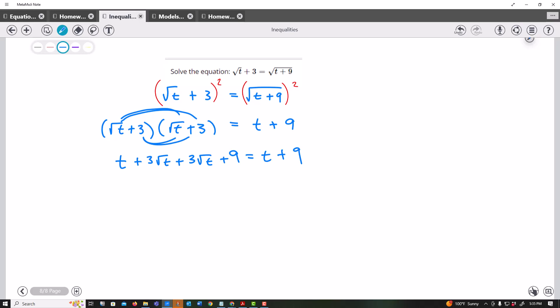Alright, so from here I probably want to get t all on one side by itself. So I need to kind of see what's going on. So if I subtract t, notice what happens here. This actually cancels out, cancels out.